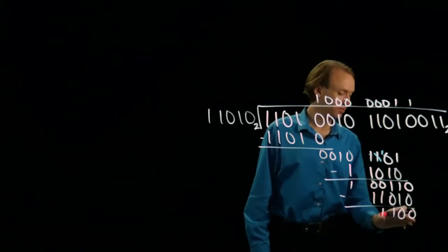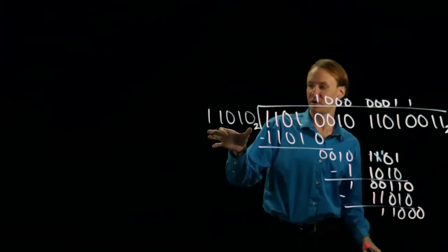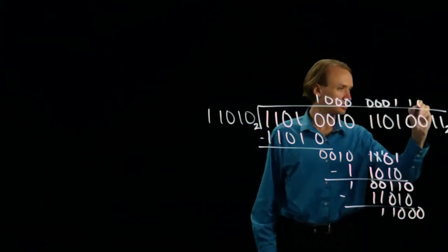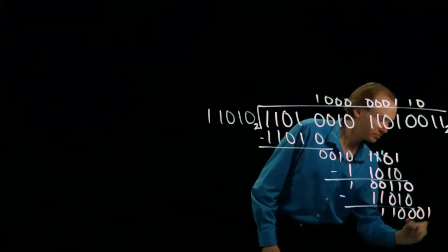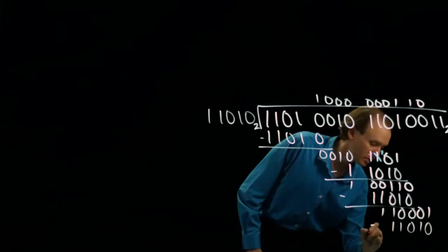Now I have a four-bit binary number. I'll pull down one zero. This five-bit binary number is still larger than this five-bit binary number, so I'll need to pull down another bit. And then I can do my subtraction again.